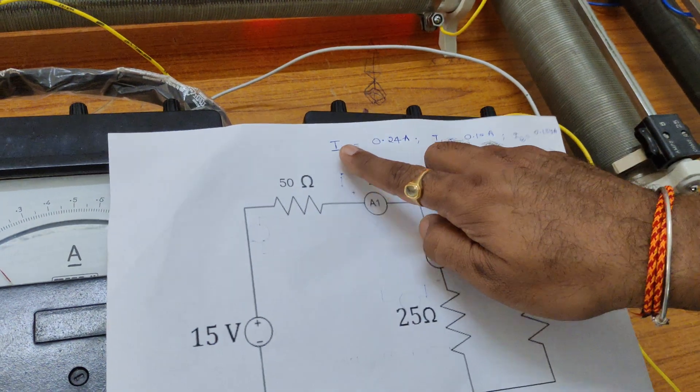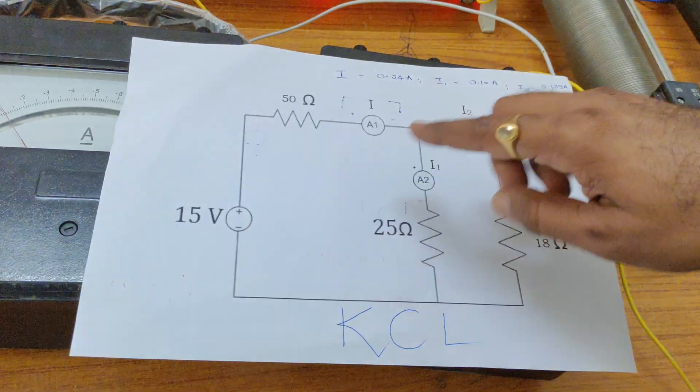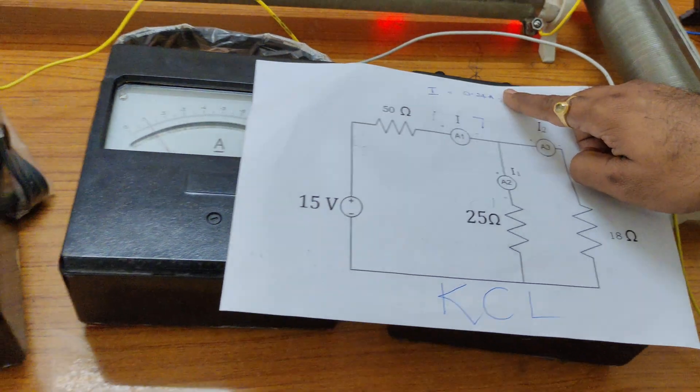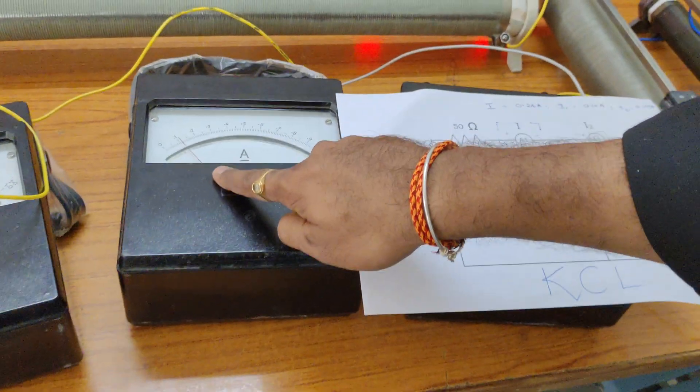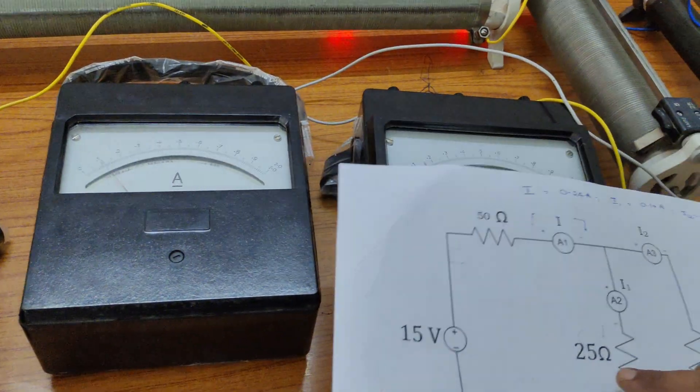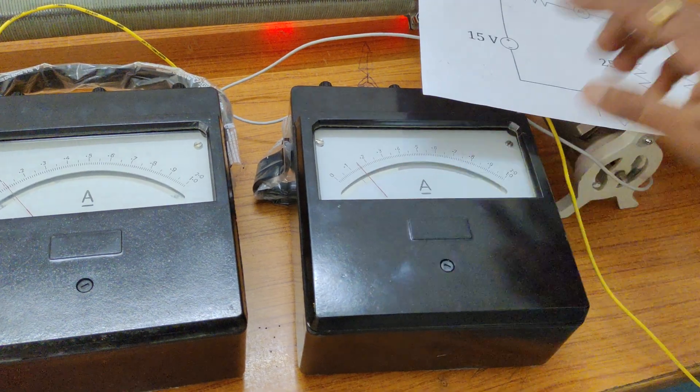You can easily observe our calculations now. Total current I equals 0.24 - exactly the value we observed theoretically. Next, I1 equals 0.1, followed by the third reading of 0.14.